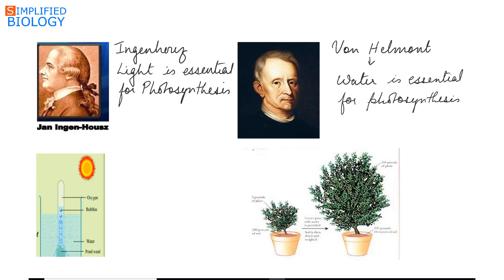Jan Ingenhousz showed that light is essential for photosynthesis. He performed an experiment by taking an aquatic plant. He showed that the aquatic plant produced bubbles in the presence of sunlight, but in the absence of sunlight or in the dark no bubbles were formed. He identified these bubbles as oxygen.